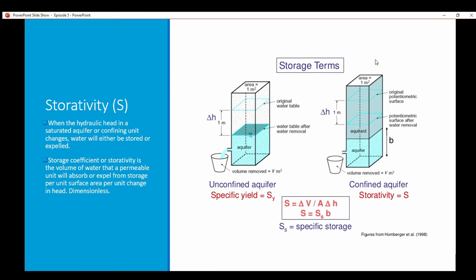You have a change in head, as you're expelling water you're going to have a change in head and you have this certain surface area. For a confined aquifer, storage is calculated as the saturated thickness multiplied by the specific storage.